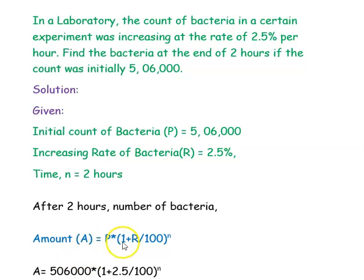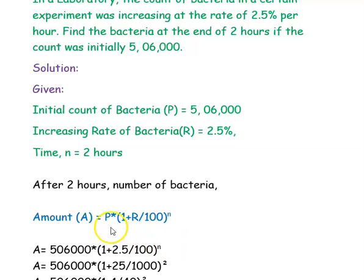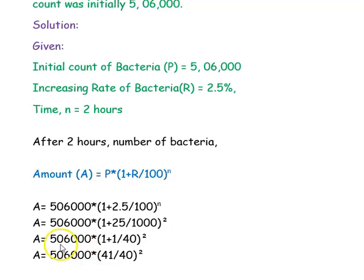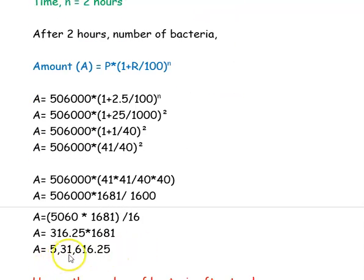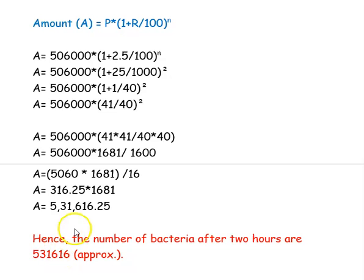Using A = P × (1 + R/100)^N: P = 5,06,000, R = 2.5% per hour, N = 2 hours. So A = 5,06,000 × (1 + 2.5/100)² = 5,06,000 × (1 + 1/40)². Simplifying gives approximately 5,31,616.25, which we approximate as 5,31,616. The bacteria count after 2 hours is 5,31,616.